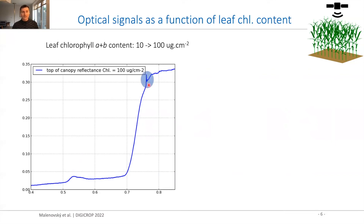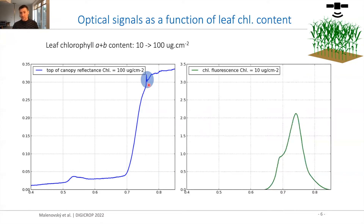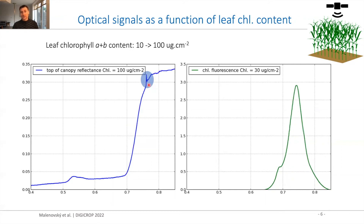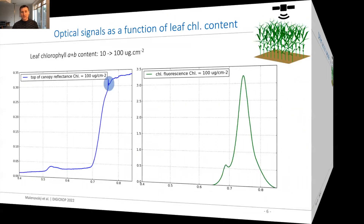You can also see a small spike at 740 nanometers, which is chlorophyll fluorescence. We can separate this and simulate chlorophyll fluorescence in DART as a unique signal. Again, this is the simulation as a function of chlorophyll content — with more chlorophyll content, the plants produce more chlorophyll fluorescence.